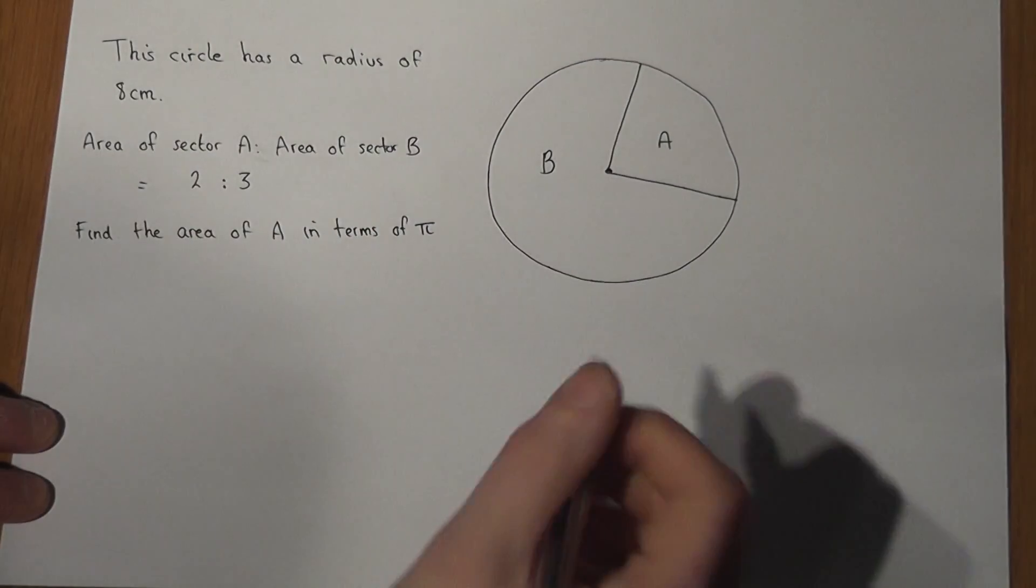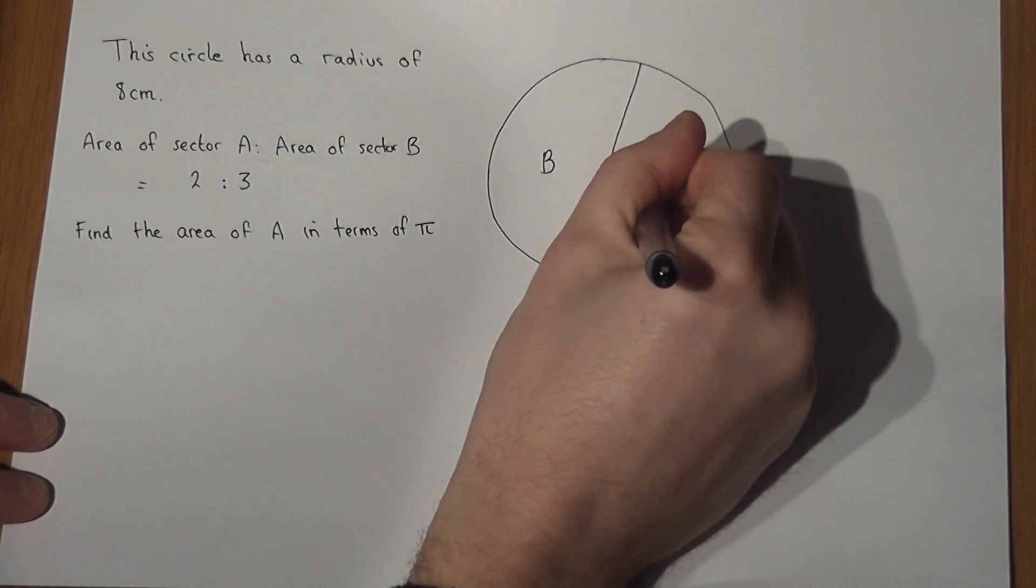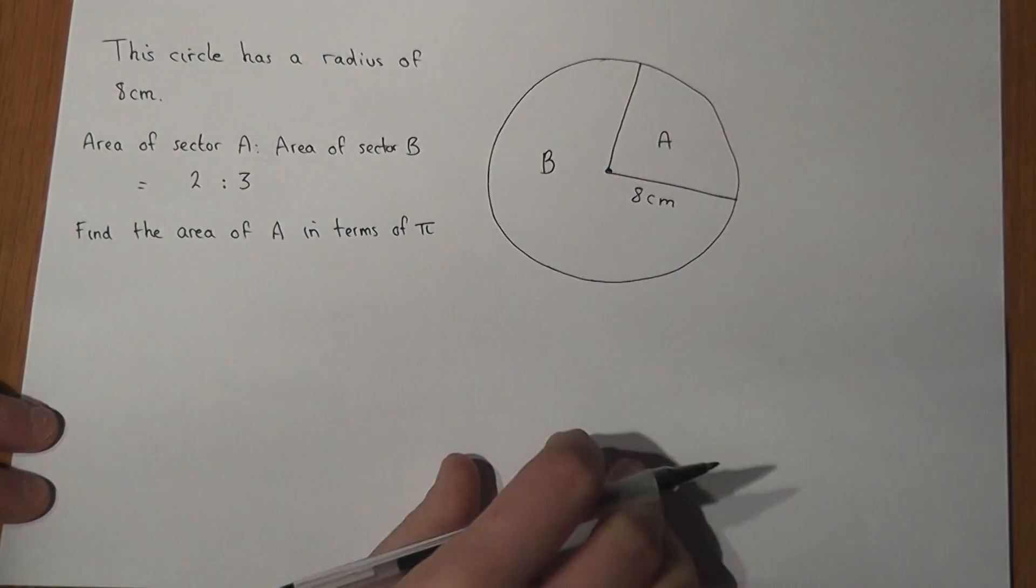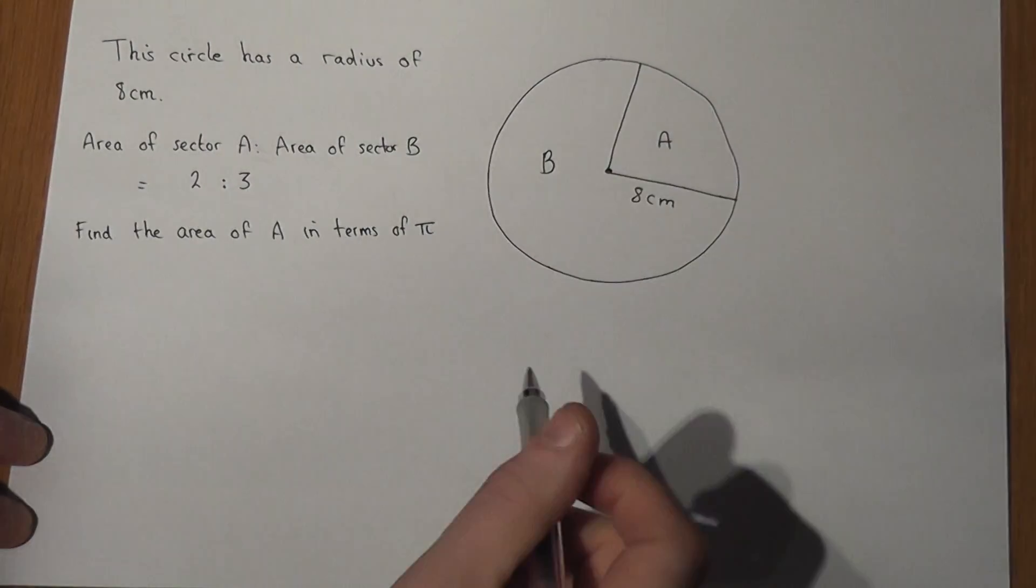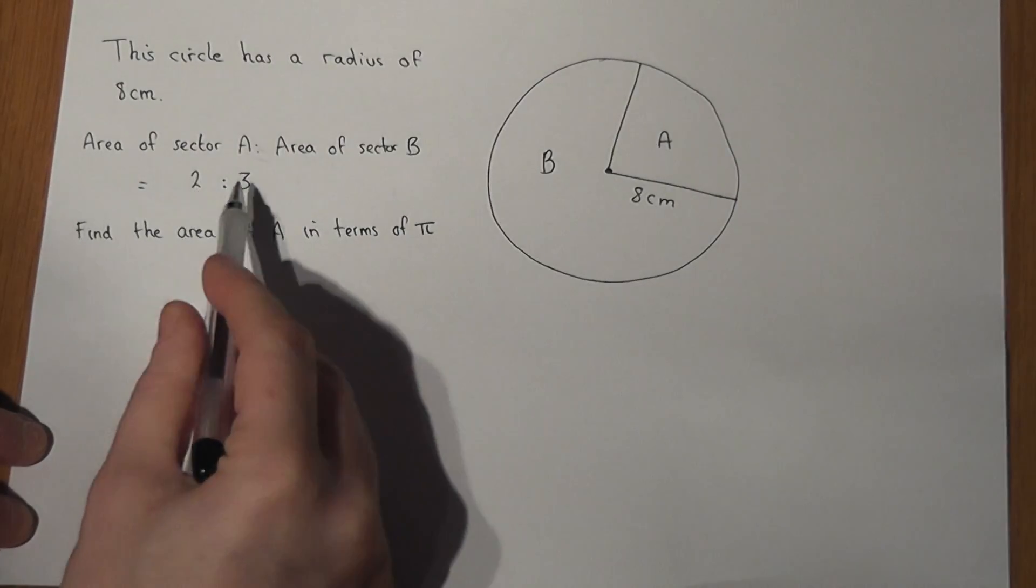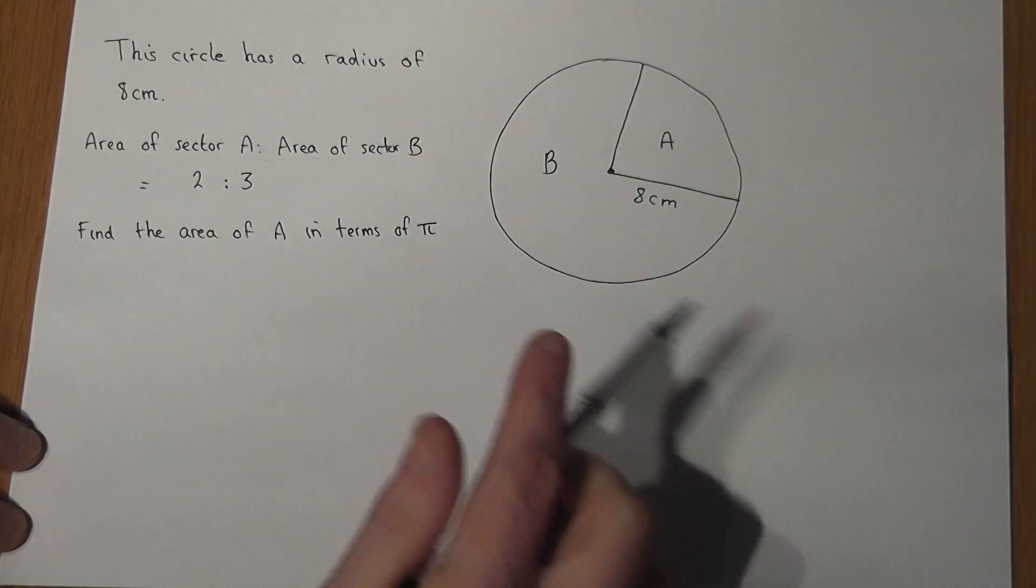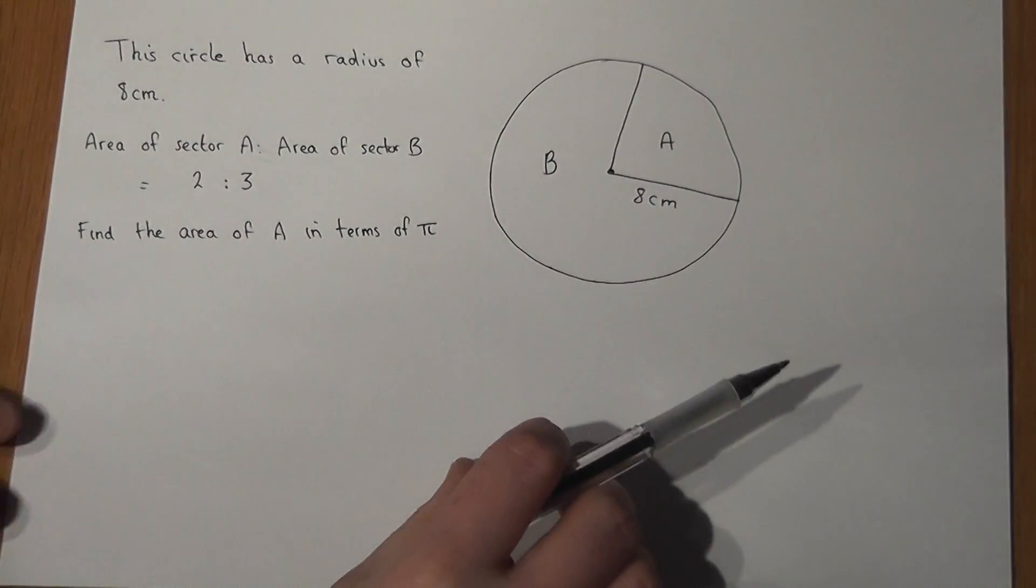a circle which has a radius of 8cm and we've got two sectors A and B which have the ratio of areas of 2 to 3, and we're asked to find the area of sector A.